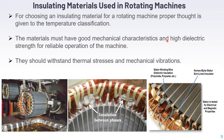Insulating materials used in rotating machines: rotating machines are generators and motors, which by construction have two parts — stator and rotor. Either on the stator or rotor there will be winding to carry current or produce EMF, and the other part will have poles or magnetic path. For choosing an insulating material for a rotating machine, proper consideration must be given with respect to temperature classification. The materials must have good mechanical characteristics and high dielectric strength for reliable operation, and should withstand thermal stresses and mechanical vibration.